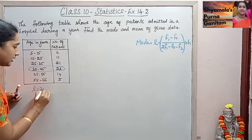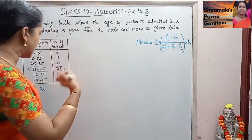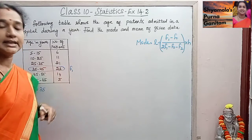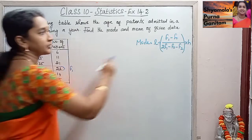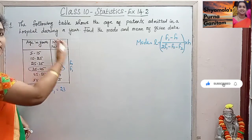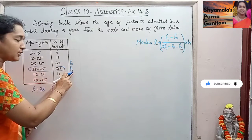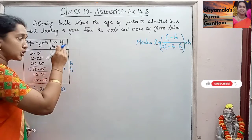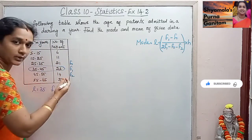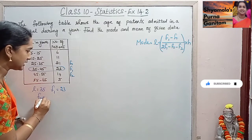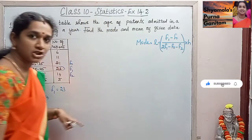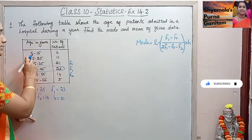So L is 35. F1 is the frequency of the modal class, which is 23. F0 is the frequency preceding the modal class, which is the previous class before 35 to 45. F2 is the frequency succeeding the modal class, which is 40. H is the class height, the difference between upper and lower limit, which is 10.